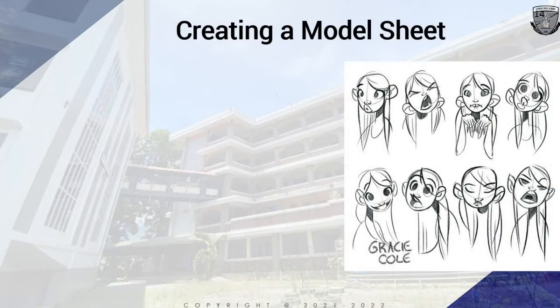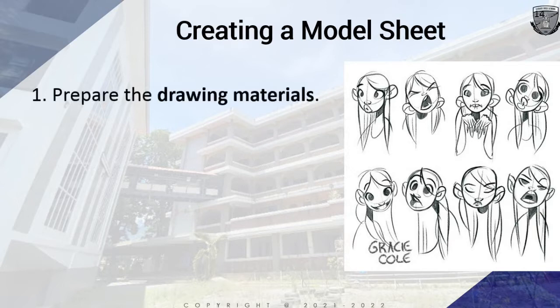Let's proceed to creating a model sheet. In the previous chapter, you can find the respective character in different poses like side, back, front, and three-fourth. Animating any character without a model sheet will produce major animation problems like inconsistency of character. Even an experienced animator will find it hard to conceive how a character looks without one.